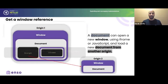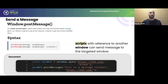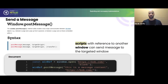Once we have a window reference, we use the window.postMessage method to send a message. It takes two arguments: the message itself — a string or object — and the target origin. The target origin lets us explicitly declare which origin should receive the message, so we can tell the browser 'this message needs to be sent to bob.com' and the browser ensures only bob.com receives it.